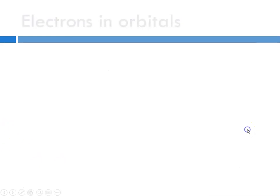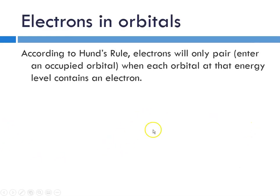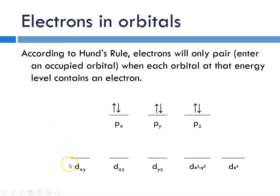To continue this, according to Hund's rule, electrons will only pair, enter an occupied orbital, when each orbital at that level contains an electron. Here's our p and d sublevels. To fill a p sublevel, we would do one, two, three, and then four, five, six. Similarly to fill a d sublevel, one, two, three, four, five electrons, six, seven, eight, nine, and ten.